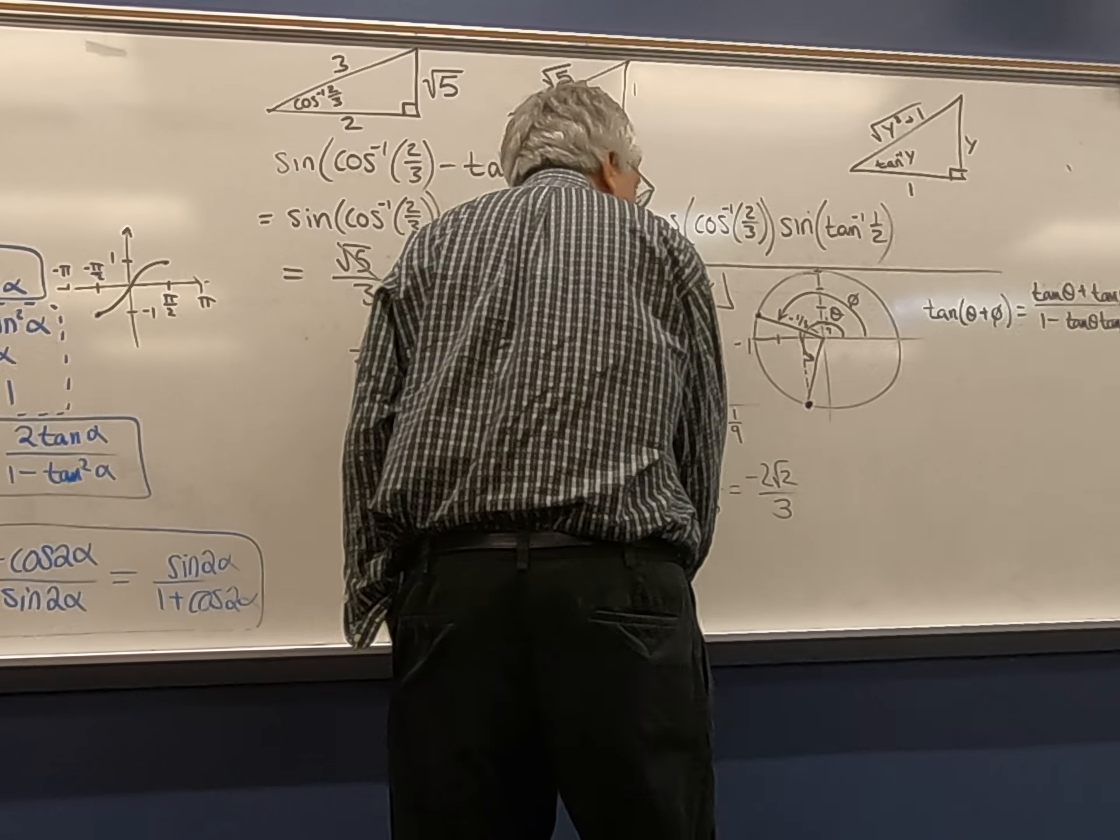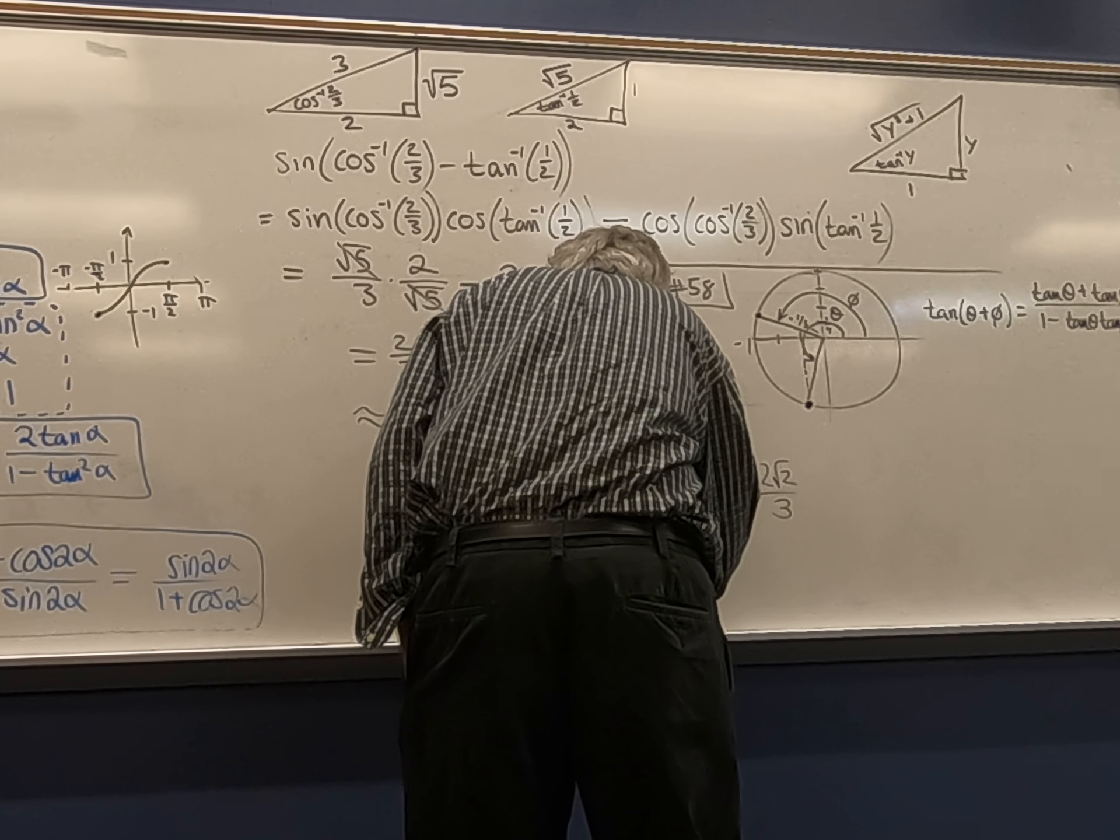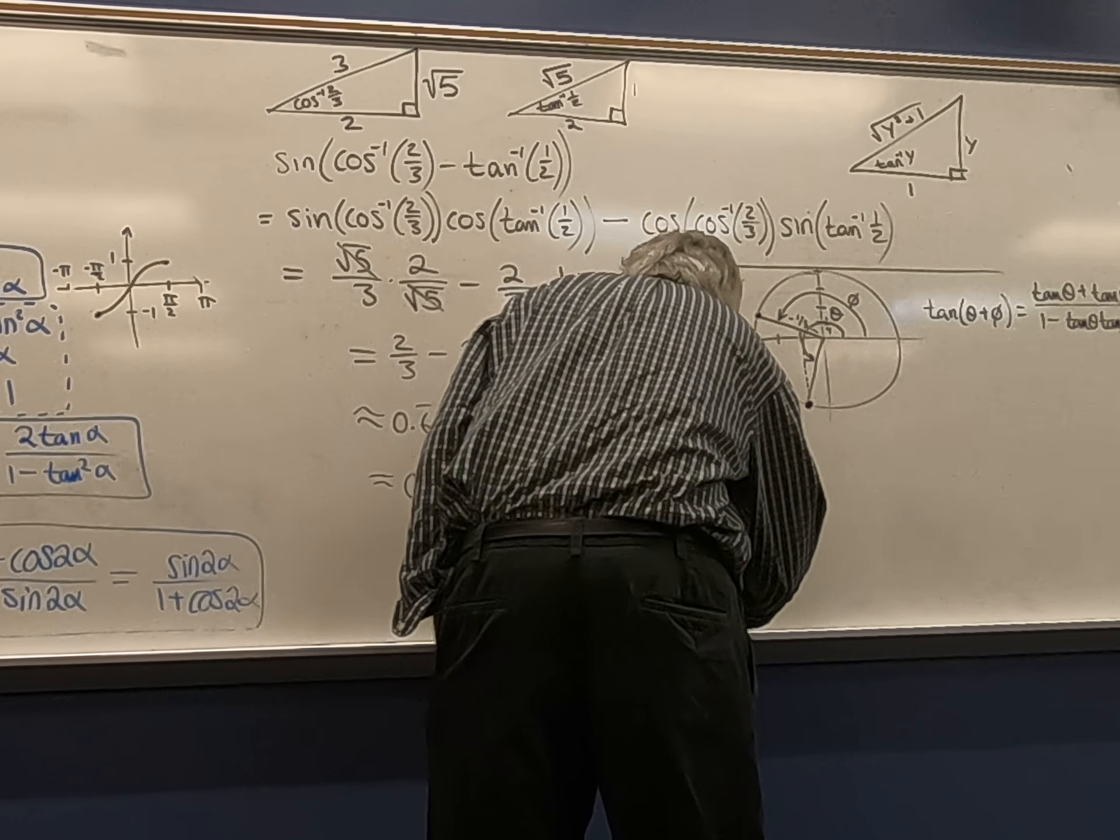I'm just using the Pythagorean identity again. Sine squared is one minus cosine squared. Cosine squared is one-ninth. One minus cosine squared will be eight-ninths. I want the square root of that, and I want the negative square root because I'm in the third quadrant where sine is negative. Okay? So what does that mean about tan theta? That's going to be sine theta over cosine theta, right? We've got both of those.